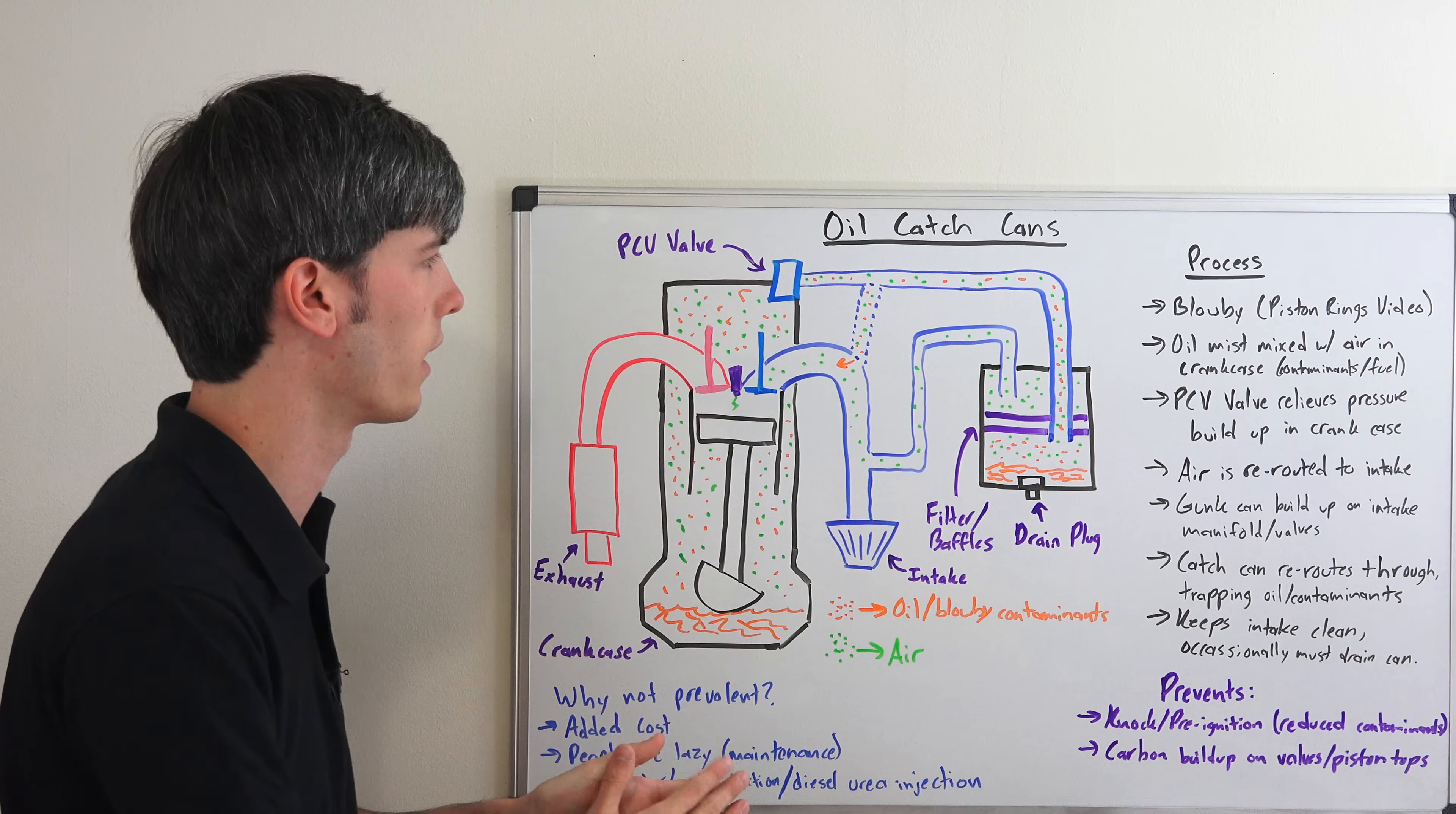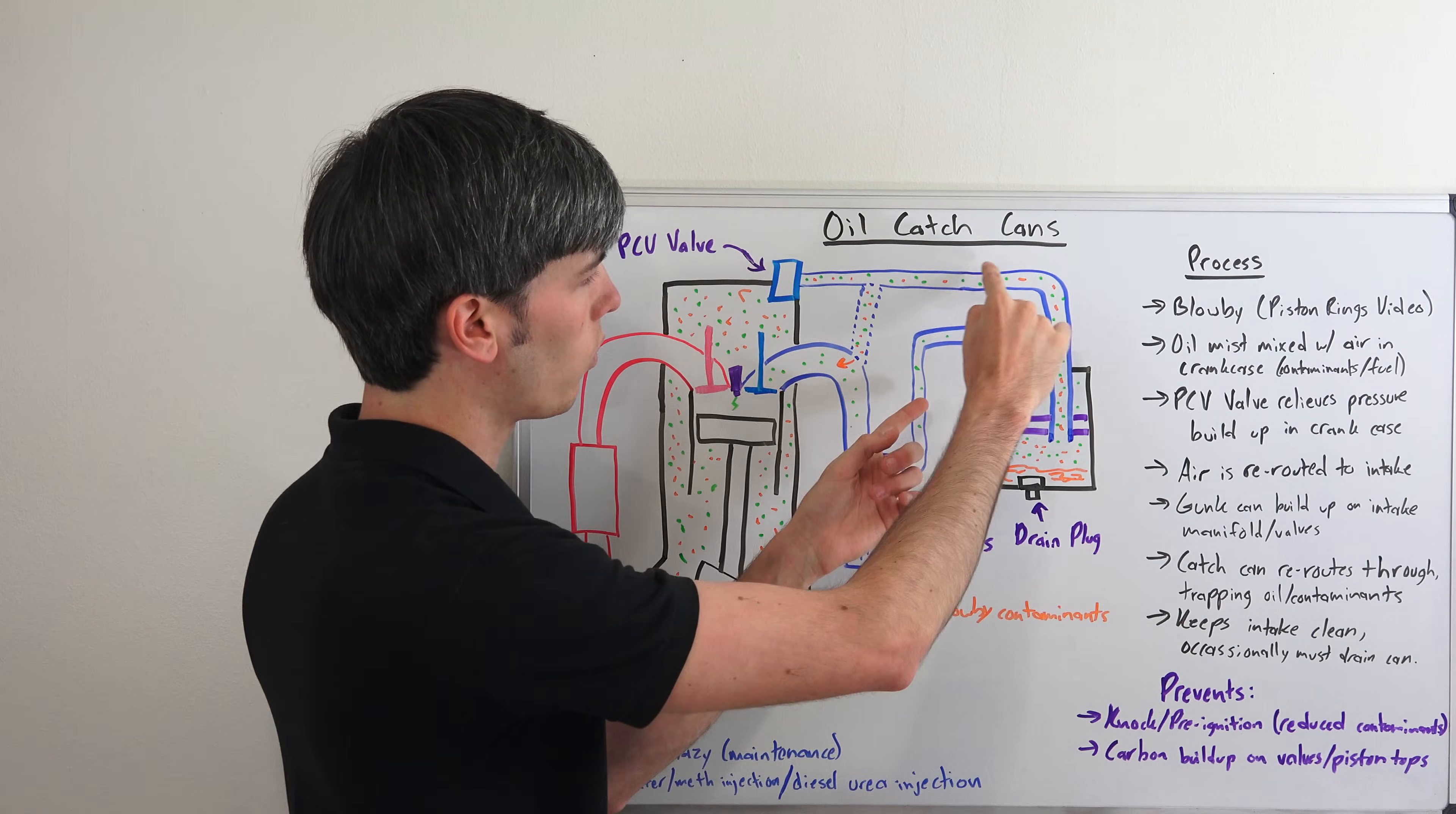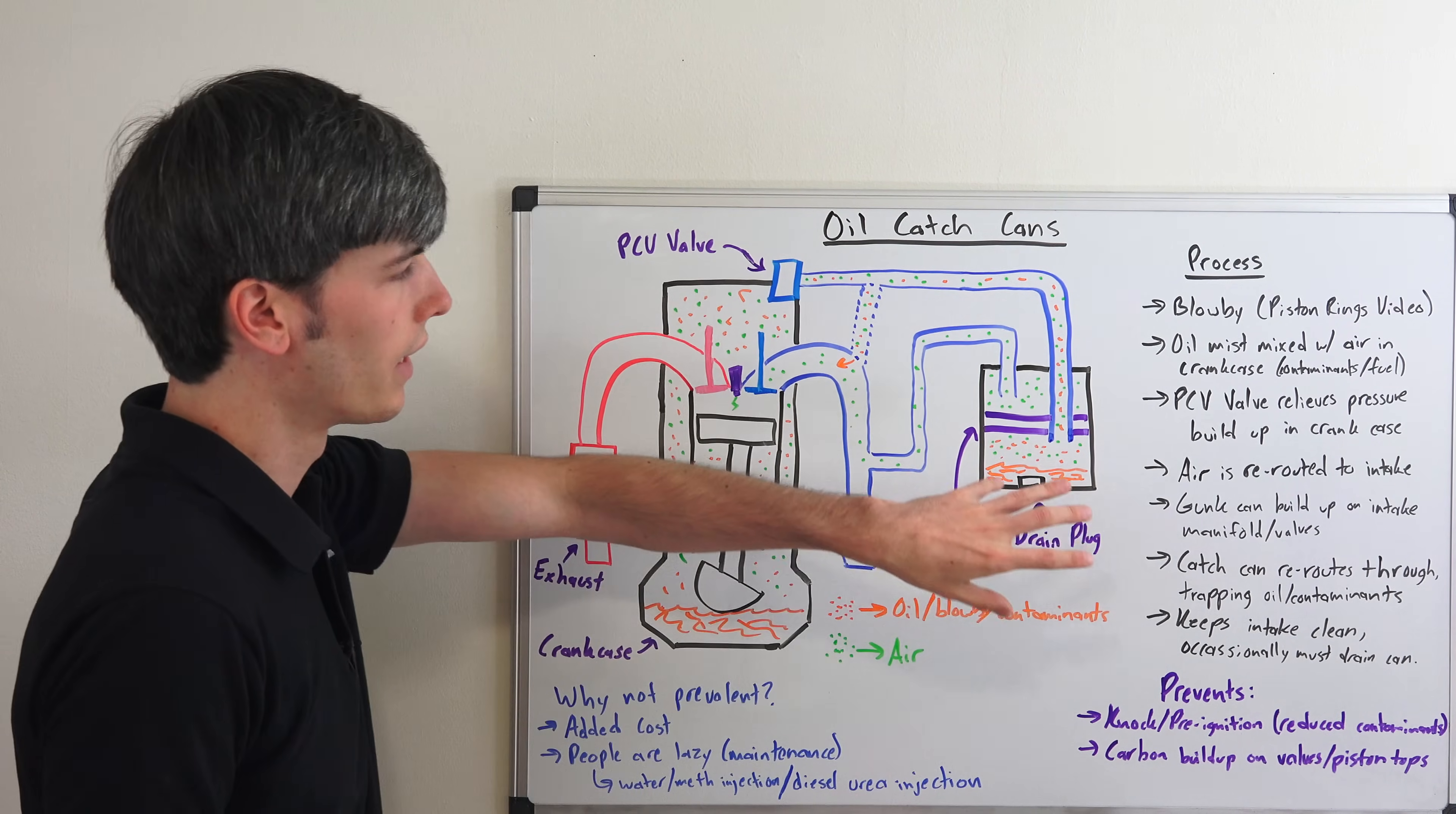So what an oil catch can does is you're rerouting that air and those contaminants and oil into this catch can. You can see you've got one tube coming in and that's going to drop everything in. Then you've got a filter, you've got baffles, and those are going to block off that oil so that only the air can get past. Then you can reroute that air back in.